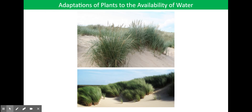The adaptations of marram grass include: the leaf is rolled longitudinally so that air is trapped inside. This air becomes humid, which reduces water loss from the leaf. The leaf can roll more tightly in very dry conditions. There is a thick waxy cuticle on the outer surface of the rolled leaf — the upper epidermis — to reduce evaporation.